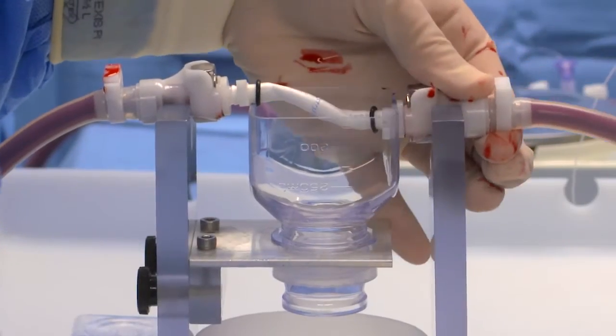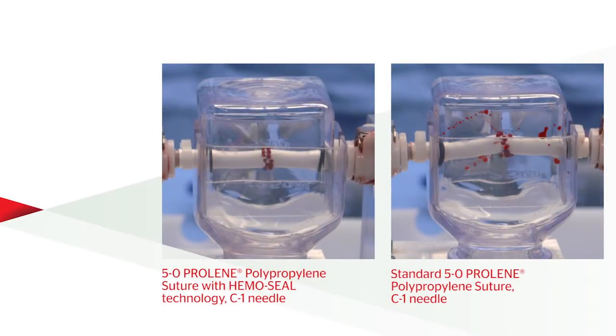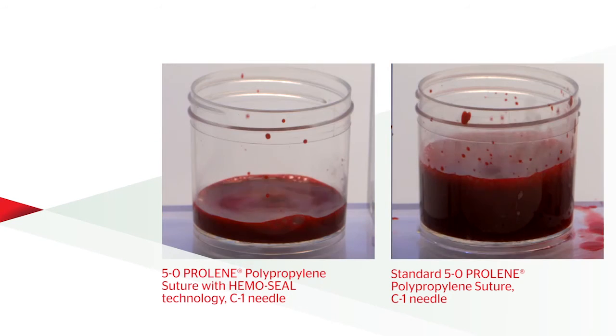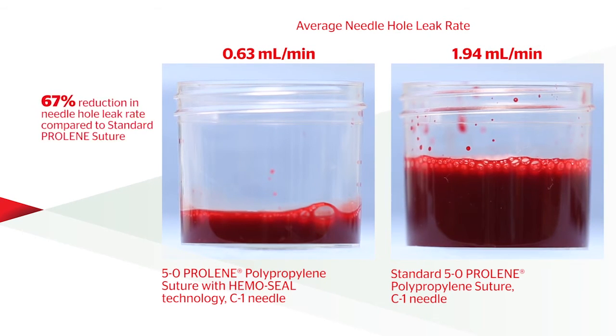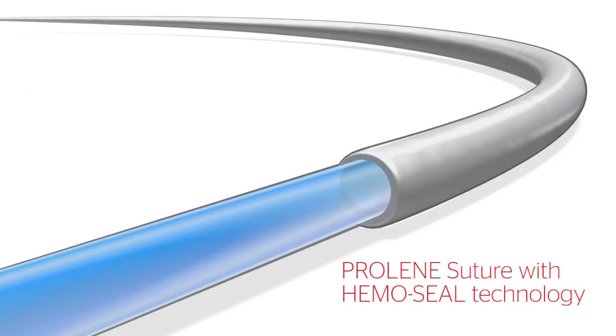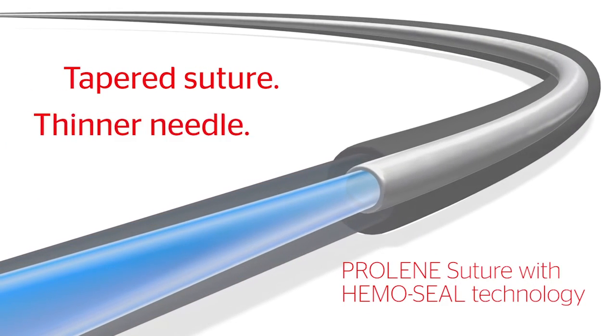Using a cardiopulmonary bypass model, heparinized porcine blood was circulated through the grafts at 72 beats per minute under normotensive pressure. After two minutes, proline suture with Hemoseal technology showed a significant reduction in the needle hole leak rate due to its unique combination of tapered suture and thinner needle.